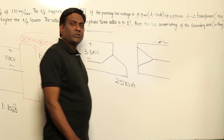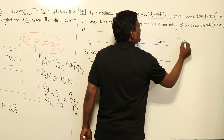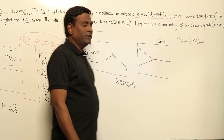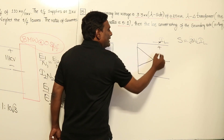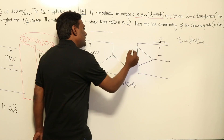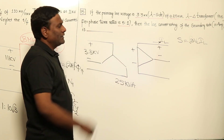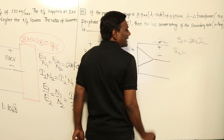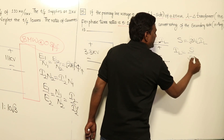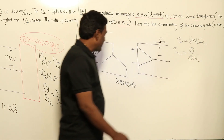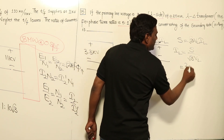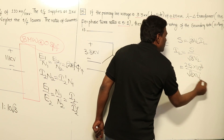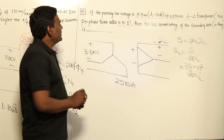To find the line current of the secondary side, we use the three-phase power equation: S = √3 × VL × IL. Rearranging, IL = S / (√3 × VL). The capacity S is given as 25 kVA, so IL = 25 kVA / (√3 × VL), where VL is the line voltage of the delta (secondary) side.